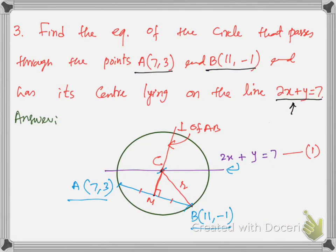Now this is question number 3: find the equation of the circle that passes through the points A and B and has its center lying on the line. There are two conditions — the circle passes through these two points and the center of the circle lies on this line. First you need to make the rough sketch — this is the rough sketch of this situation.